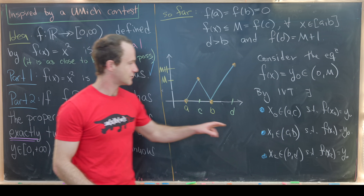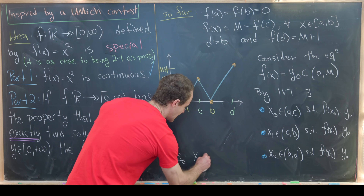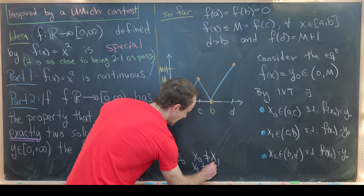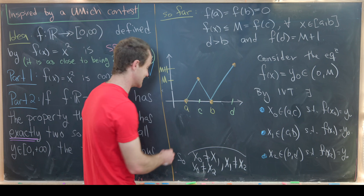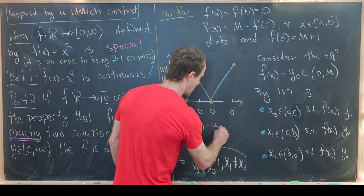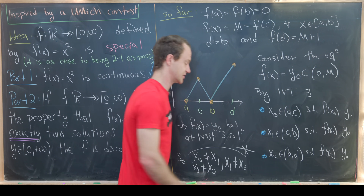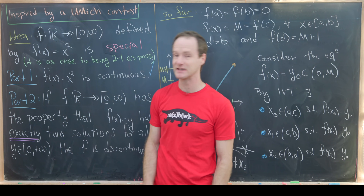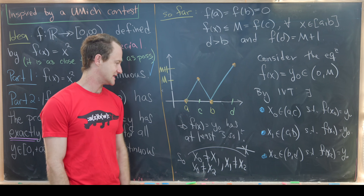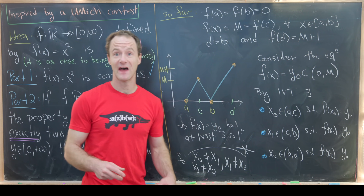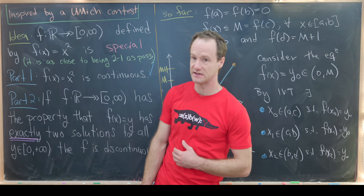Since the intervals (a, c), (c, b), and (b, d) are disjoint, we have x₀ ≠ x₁, x₀ ≠ x₂, and x₁ ≠ x₂, yet all three give f(x) = y₀. So f(x) = y₀ has at least three solutions, contradicting the two-to-one assumption. Therefore, our initial assumption that f is continuous must be false, meaning any such function satisfying the strict two-to-one property everywhere must be discontinuous.